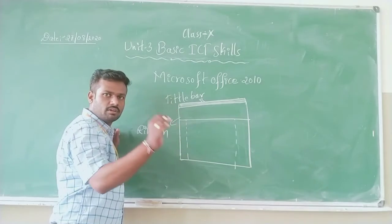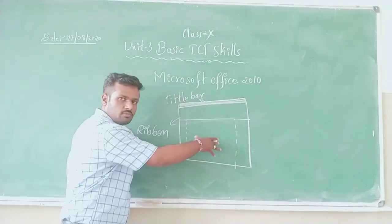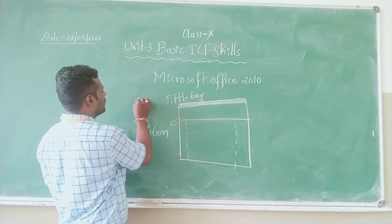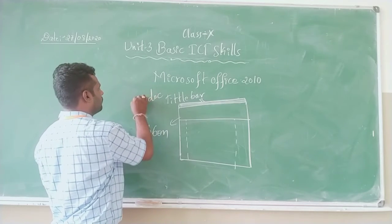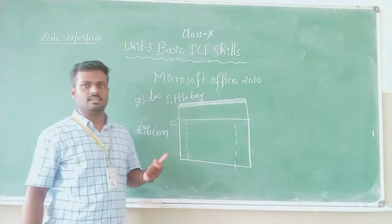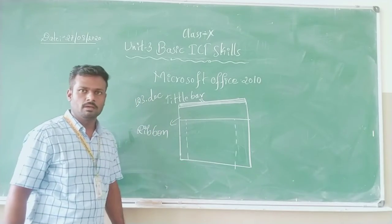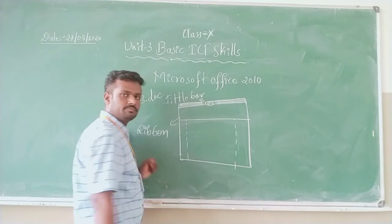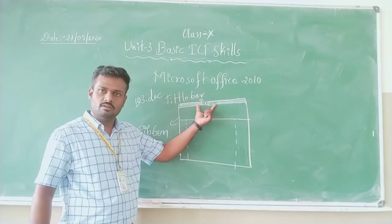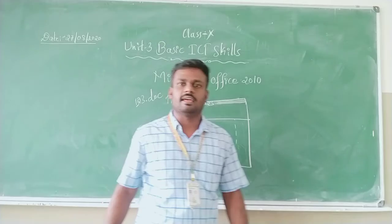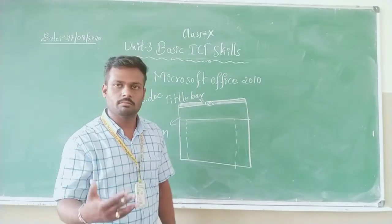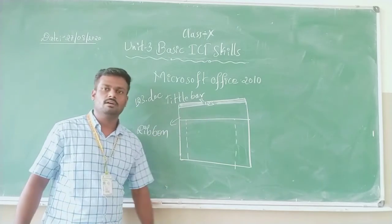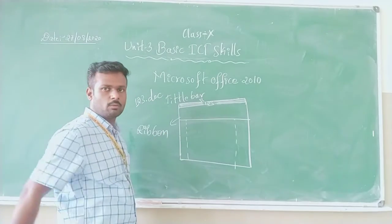For example, suppose after saving this file I give it the name '123.docx'. That file name will appear in the title bar. So the use of the title bar is that it shows the name of the file. Below the title bar we have the ribbon area with different kinds of tabs.